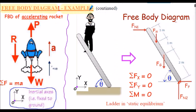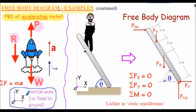On the left-hand side here we have a free-body diagram of a rocket accelerating vertically upwards. All the forces are applied to the rocket, and our inertial axes are shown here with positive notation. To analyse this problem we would apply Newton's second law — summation of all the forces equals Ma — to calculate the acceleration.